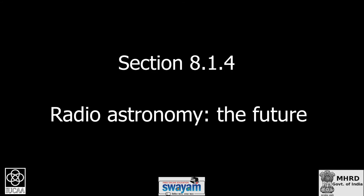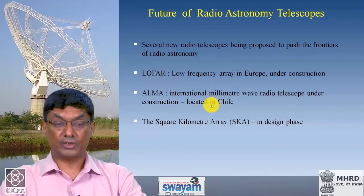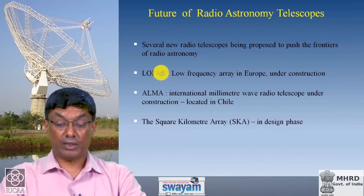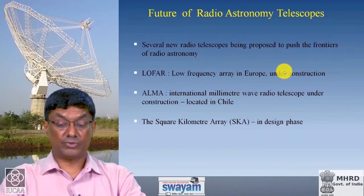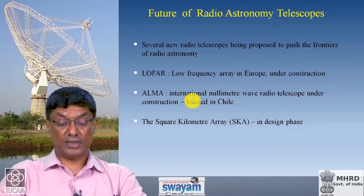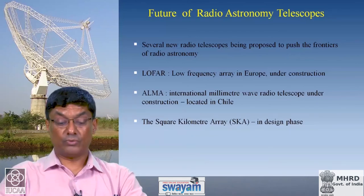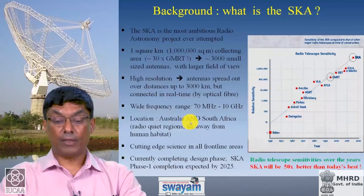That brings us to the last part: looking ahead to the future of radio astronomy. Beyond the upgraded GMRT, and our own plans to further enhance and expand it, other facilities include LOFAR — a low-frequency array in Europe now under operation and producing results — and ALMA — the international millimetre-wave radio telescope now operational in Chile. The radio astronomy community is most excited about the Square Kilometre Array, currently in the design phase.